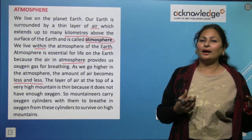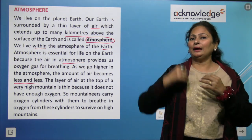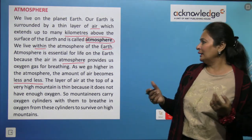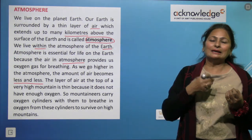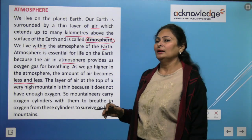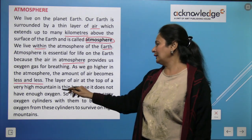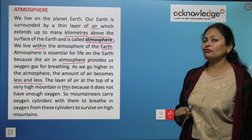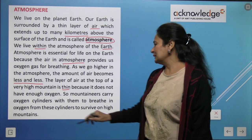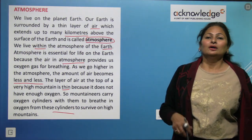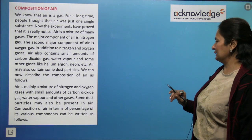Because oxygen decreases at higher altitudes, mountaineers take oxygen cylinders along with them when climbing high mountains. The layer of air at the top of very high mountains is thin and does not have enough oxygen in it, which is why mountaineers carry oxygen cylinders to survive.